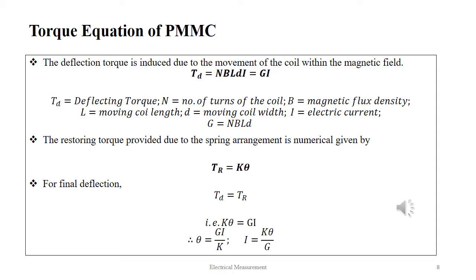The restoring torque provided due to the spring arrangement is numerically given by TR equal to K·θ, where K is a constant of proportionality. For finite deflection, TD should be equal to TR, that is K·θ should be equal to G·I. Thus, we calculate θ as G·I / K and we calculate I as K·θ / G.